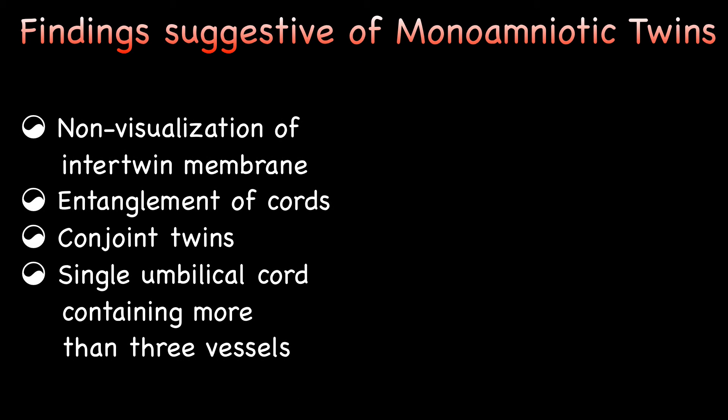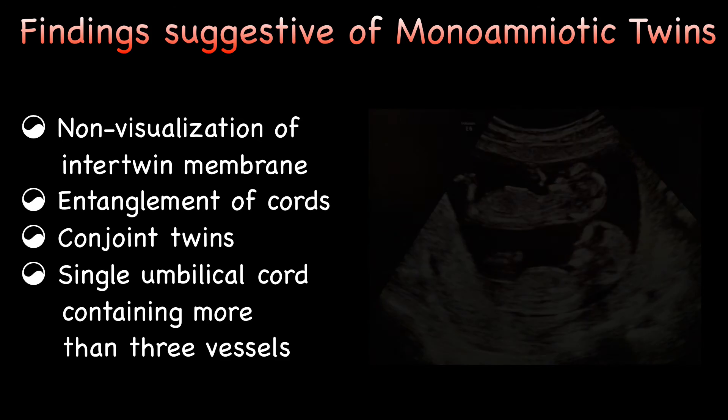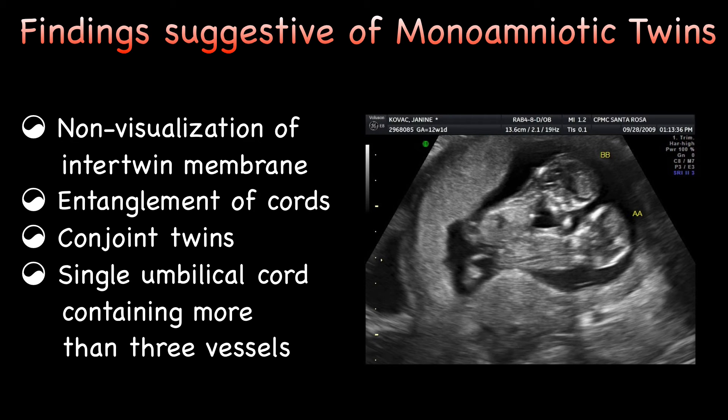Monoamnioticity occurs in approximately 1% of all monozygotic twin pregnancies. These pregnancies are at an elevated risk of fetal death because of cord entanglement. Therefore, it is important to rule out monoamnioticity on ultrasound. Ultrasound findings suggestive of monoamniotic twins are non-visualization of the inter-twin membrane, entanglement of cords, conjoined twins, and a single umbilical cord containing more than three vessels.